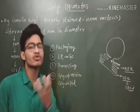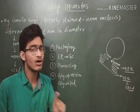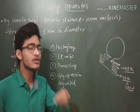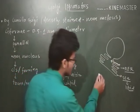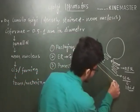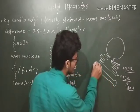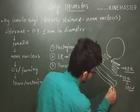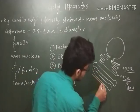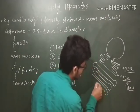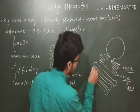The processing in the ER is not completed yet — it needs to be further processed. And to further process it, we have another organelle which is called the Golgi complex, or simply the Golgi body. So we need the Golgi body to process the proteins completely.